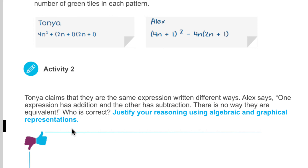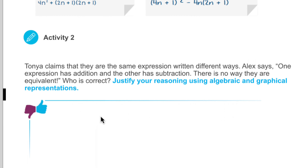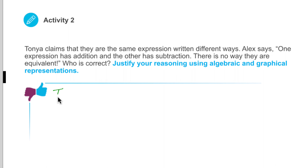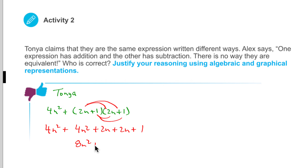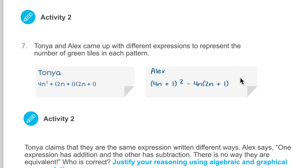What we're going to do to solve this is some simplification using algebra. Let's do Tanya's first: 4n squared plus (2n + 1) squared, which means times itself. I'm going to multiply the squared part out. The 4n squared doesn't change. When I expand (2n+1)(2n+1), I get 4n squared plus 2n plus 2n plus 1. Combining like terms: 4 plus 4 gives us 8n squared, and 2n plus 2n is 4n, plus 1. So Tanya's simplified expression is 8n squared plus 4n plus 1. Pause the video and figure out Alex's — see if they are equivalent expressions.